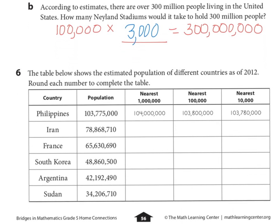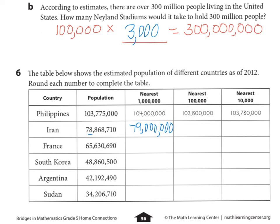Looking at number 6: the table shows the estimated population of different countries as of 2012. Round each number to complete the table. Rounding to the nearest one million: I look to the right and see eight, so that digit increases by one to make seventy-nine million. Rounding to the nearest one hundred thousand: I look to the right, I see a six, so the number becomes sixty-eight million, nine hundred thousand. Rounding to the nearest ten thousand: I look to the right, I see an eight — it increases by one — and the number is seventy-eight million, eight hundred seventy thousand.